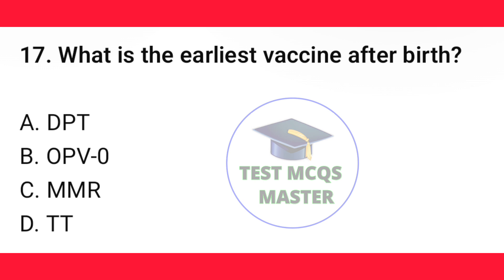Question number 17. What is the earliest vaccine after birth? The correct option is B — OPV zero.